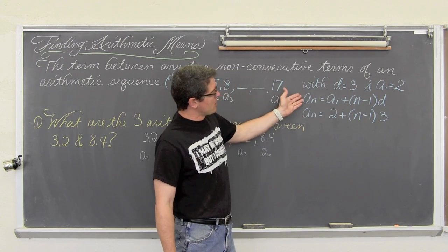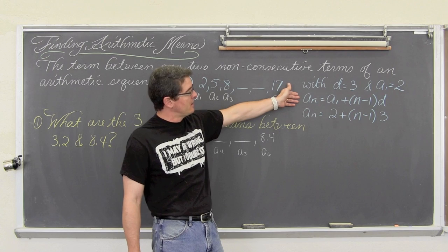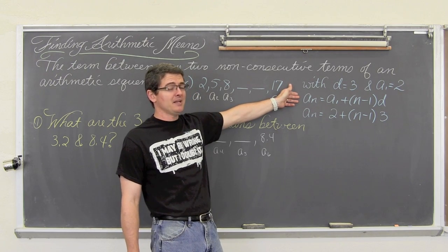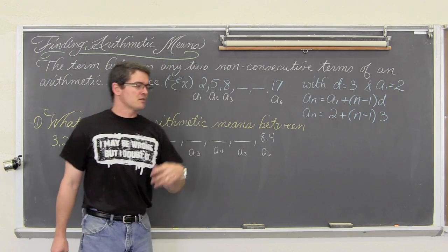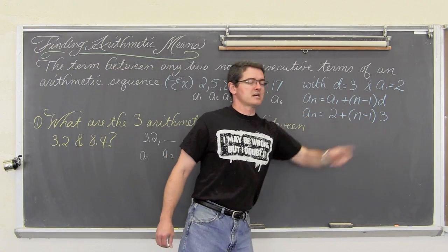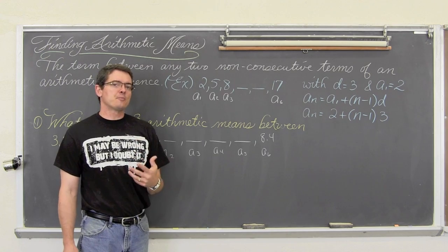And you might need to work with the general form of an arithmetic sequence: a sub n is equal to a sub 1 plus n minus 1 times d. Come up with that general formula for the arithmetic sequence, or general expression, whatever your textbook and teacher is calling it, to help you solve the problem.